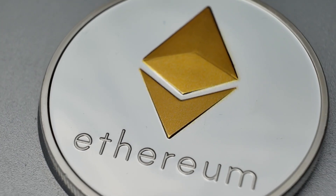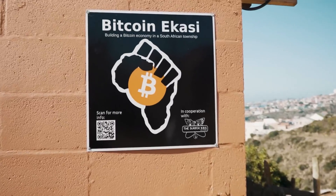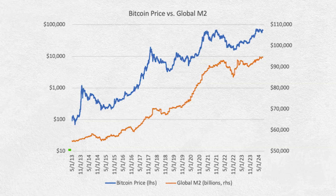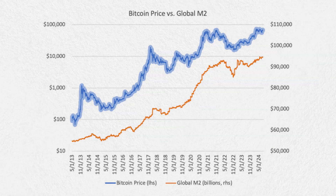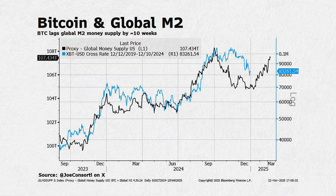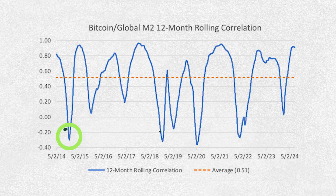Crypto markets are uniquely sensitive to changes in global money supply, as they trade 24/7 and are accessible to practically anyone in any nation. From 2013 to 2024, Bitcoin's price has a 94% correlation with global liquidity, typically lagging behind M2 by about 10 weeks. That said, Bitcoin's correlation with global M2 can sometimes decouple due to crypto-specific events.